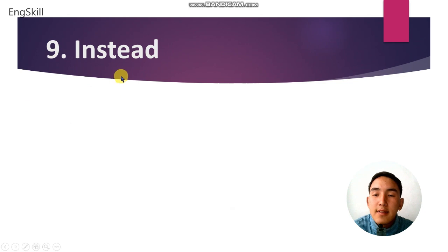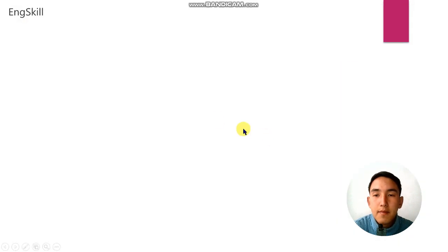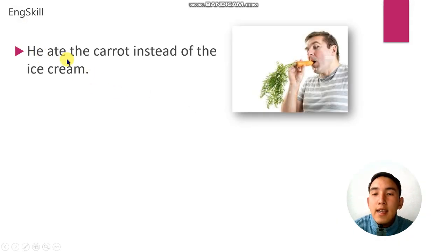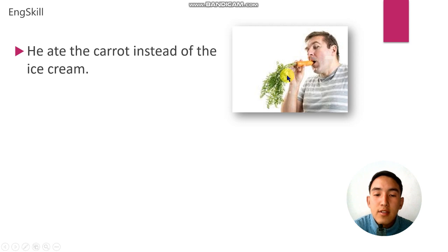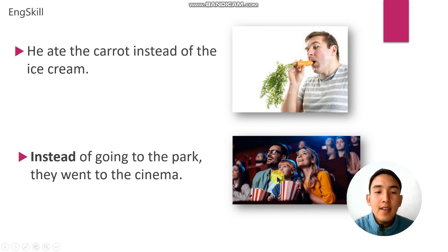Word number 9 is instead. Instead means in place of something. For example: he ate the carrot instead of the ice cream. Example number 2: instead of going to the park, they went to the cinema.